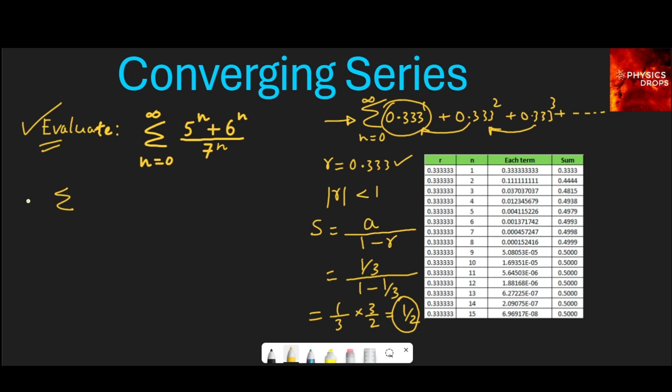Let us take this as sum of n equals 0 to infinity, 5 to the power n upon 7 to the power n, plus sum n equals 0 to infinity, 6^n upon 7^n.